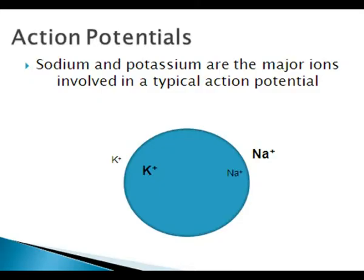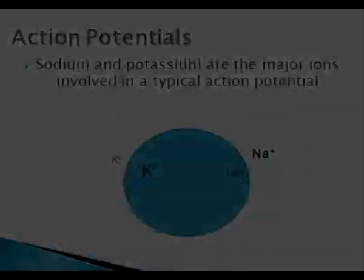In a typical neuron action potential, sodium and potassium are the major ions that are involved. Sodium is higher outside of the cell, and potassium is higher inside of the cell.